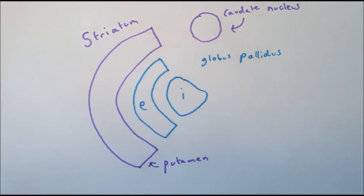The globus pallidus, meaning pale globe, is a single cluster of cell bodies. However, there are two distinct populations of cells which participate in two separate circuits, the internal globus pallidus and the external globus pallidus.